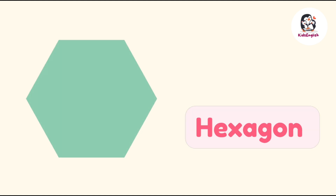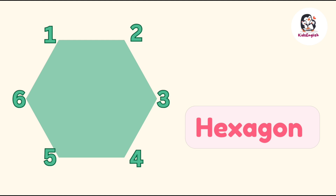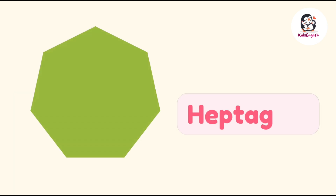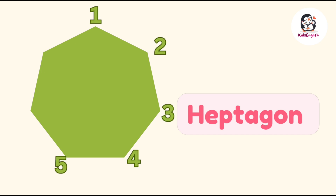Hexagon — hexagon has six sides, one, two, three, four, five, six. Heptagon — heptagon has seven sides, one, two, three, four, five, six, seven.